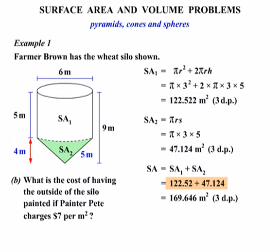Now we're not just looking for surface area. We're looking for the cost here of Painter Pete's work. We know he charges $7 per square meter, and there's 169.646 square meters. So let's times them together, 7 times 169.646, and we end up with a grand total of $1,187.52.